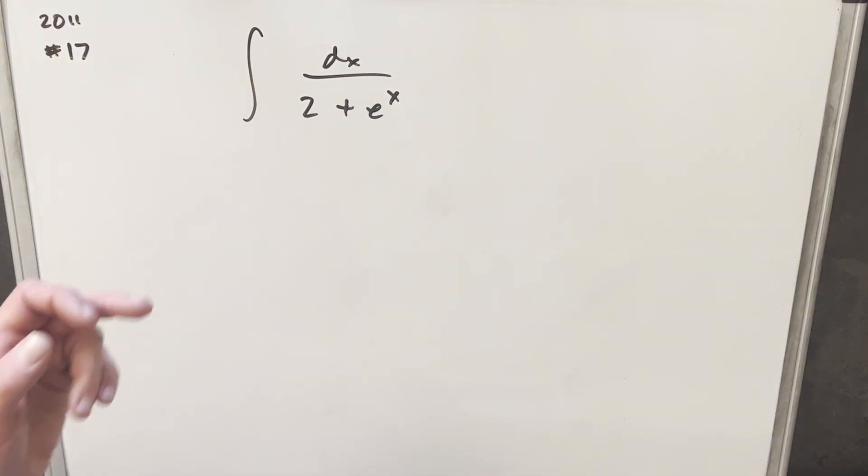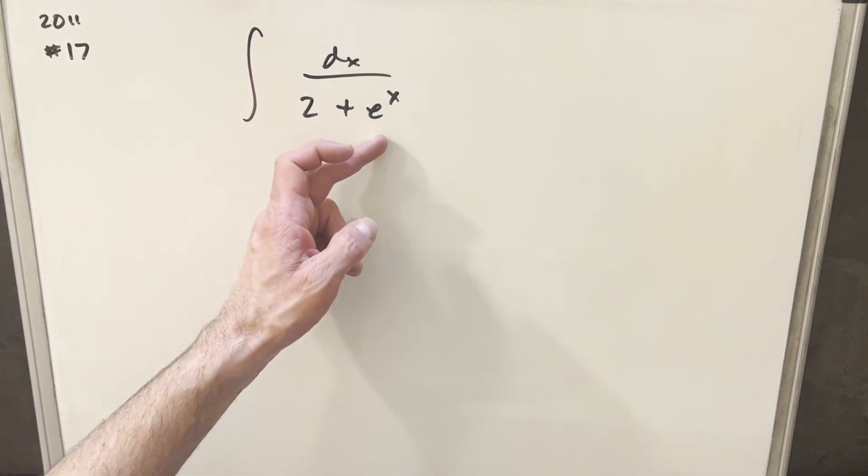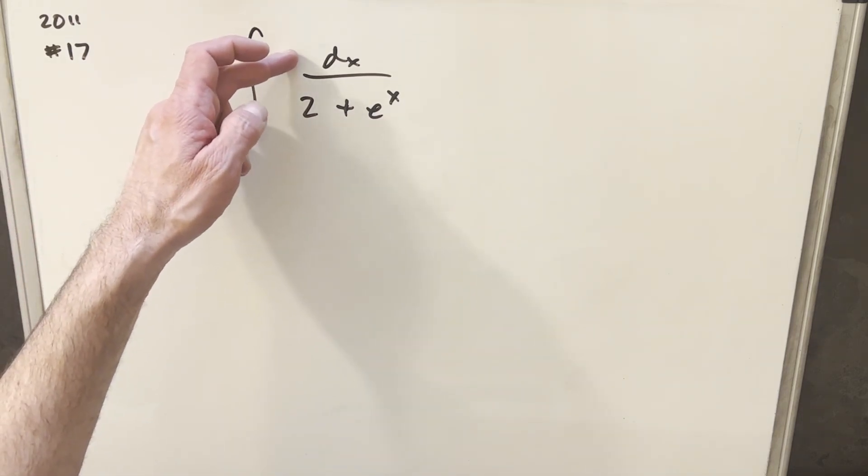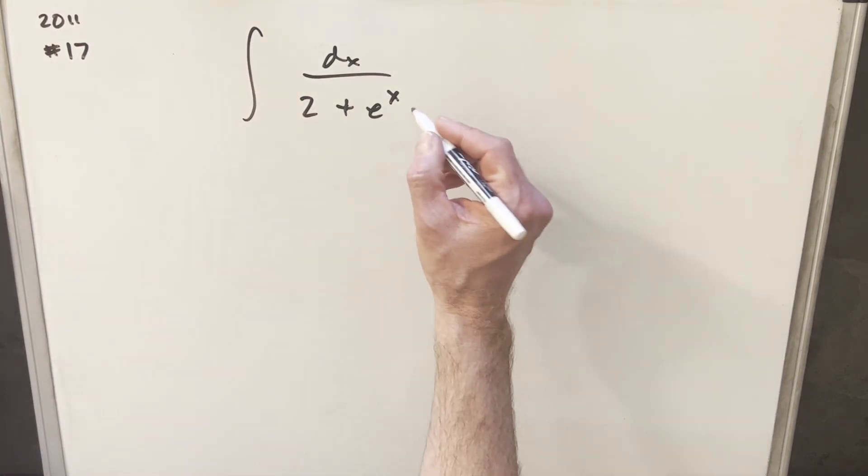Typically when I have an integral like this, I'm looking for a u-substitution. The key to that is having, because we know the derivative of e^x, or if it was e^(-x), is just e^x. Really what I want to happen is I want that in the numerator, and we don't have that here, so that's our only problem. But we can create that,